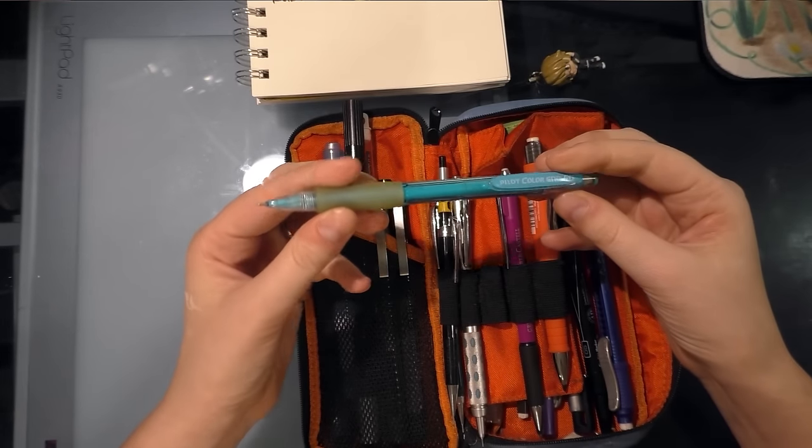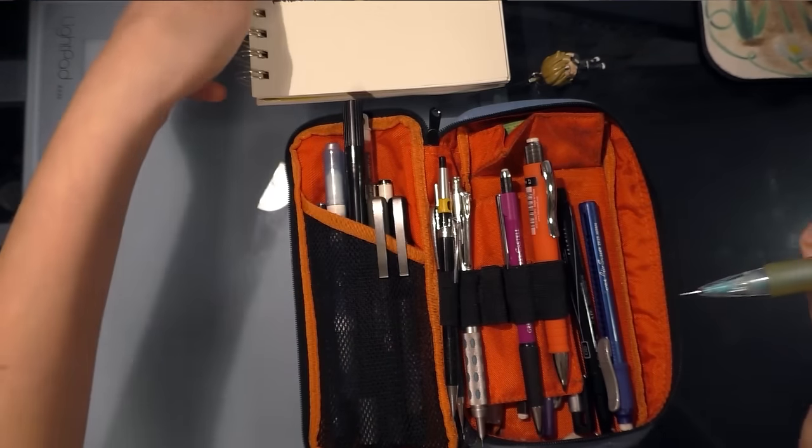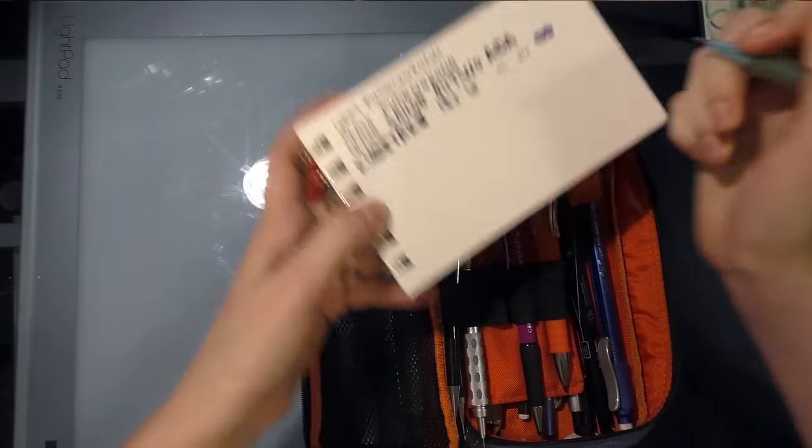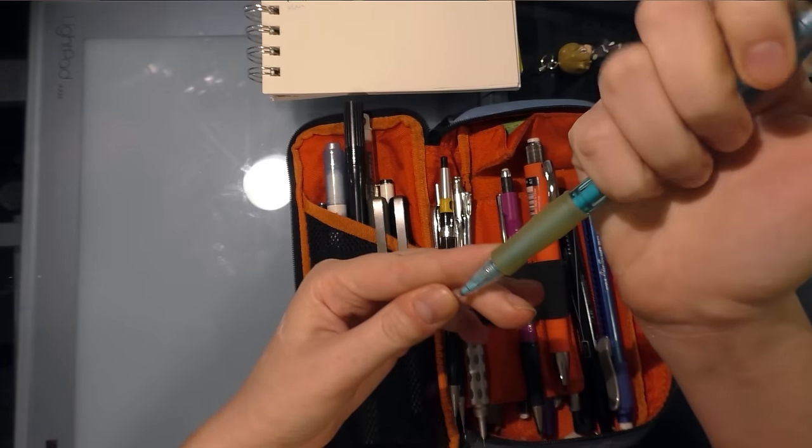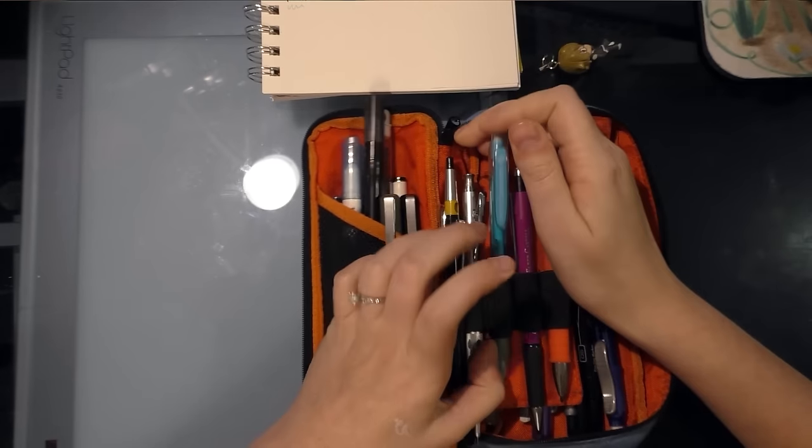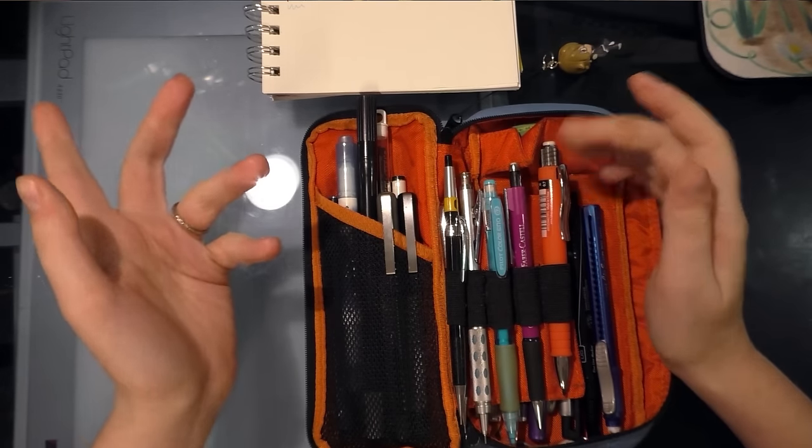Then I have this Pilot Color Eno that has non-photo blue lead, and I get my non-photo blue lead from a couple of sources, so check the description and also keep an eye out for the blog post because I'm gonna detail all of this.